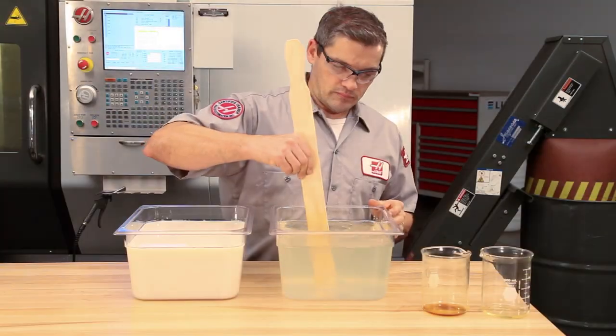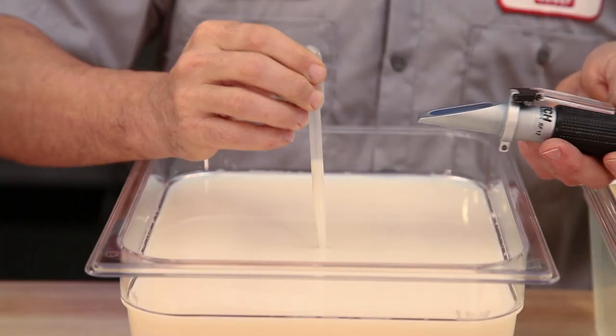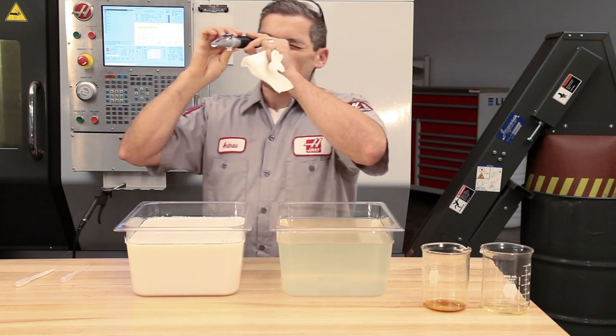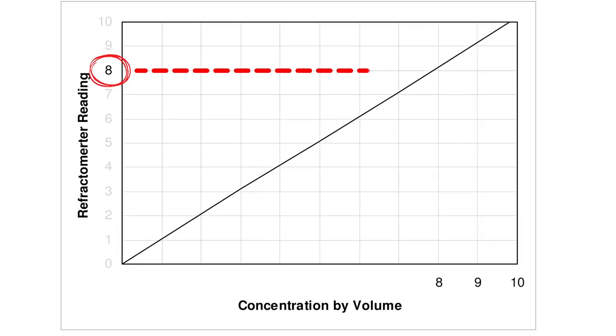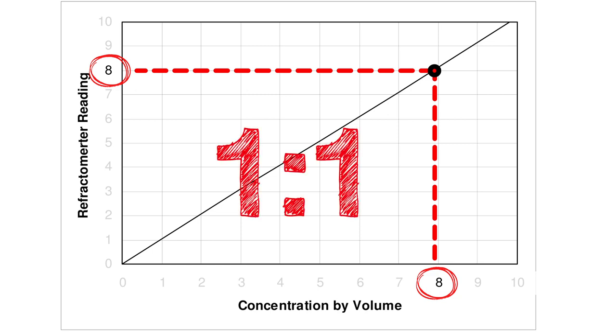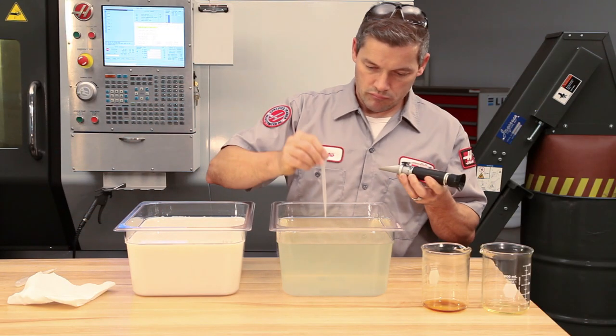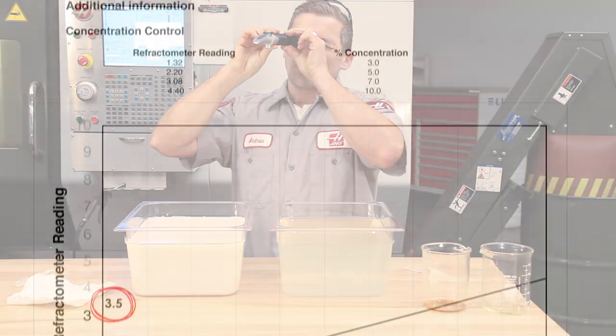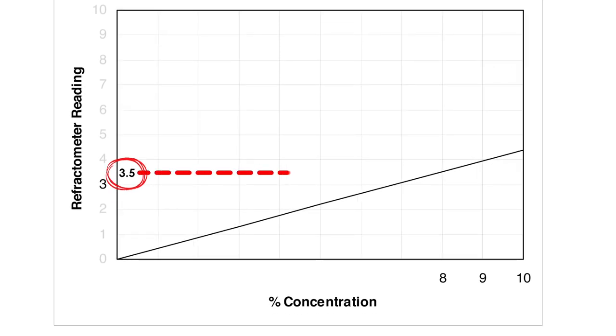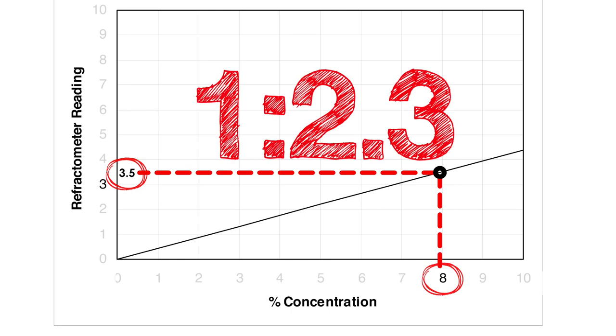Now, let's see what our refractometer readings come out to. This soluble oil coolant shows a reading of 8% BRICS. When you look at the manufacturer's chart for this coolant, 8% BRICS equals 8% actual concentration, or 1 to 1. The full synthetic coolant, however, shows a reading of 3.5% BRICS. Looking at the chart for this coolant, 3.5% BRICS equals 8% actual concentration. The ratio of this coolant is about 1 to 2.3.